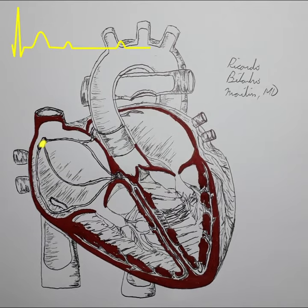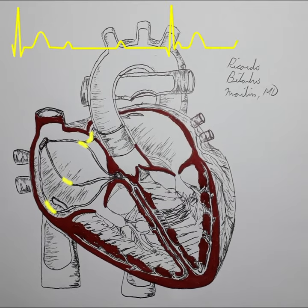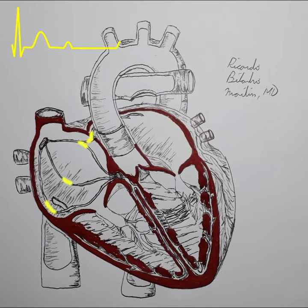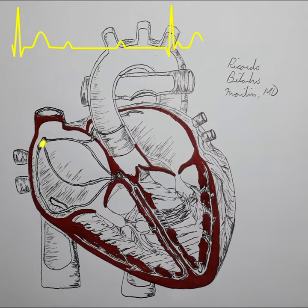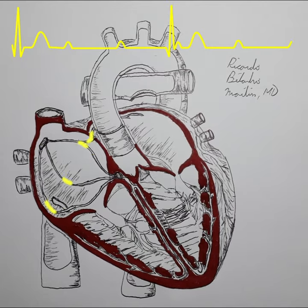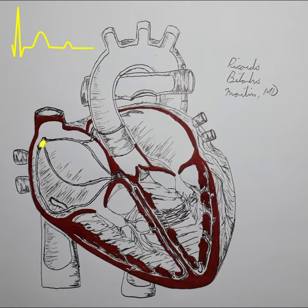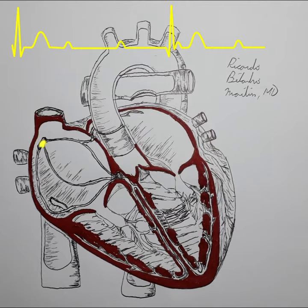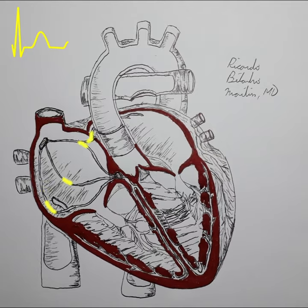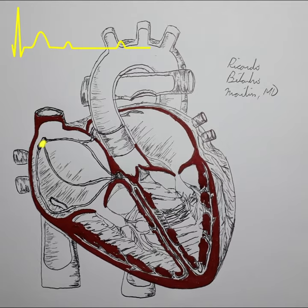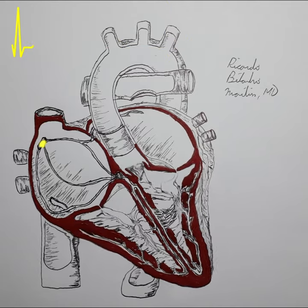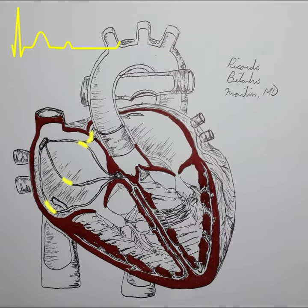A complete heart block, or third-degree atrioventricular block, is a bradyarrhythmia in which the atrioventricular node does not conduct any electrical stimulus whatsoever. Consequently, the atria and ventricles become completely dissociated and beat in their own rhythm with no regard to each other.